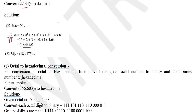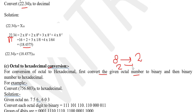For octal to hexadecimal conversion, we convert in two steps using binary as an intermediate. First, we convert octal to binary, then binary to hexadecimal. The base 8 number is first converted to base 2, and then that base 2 is converted to base 16.